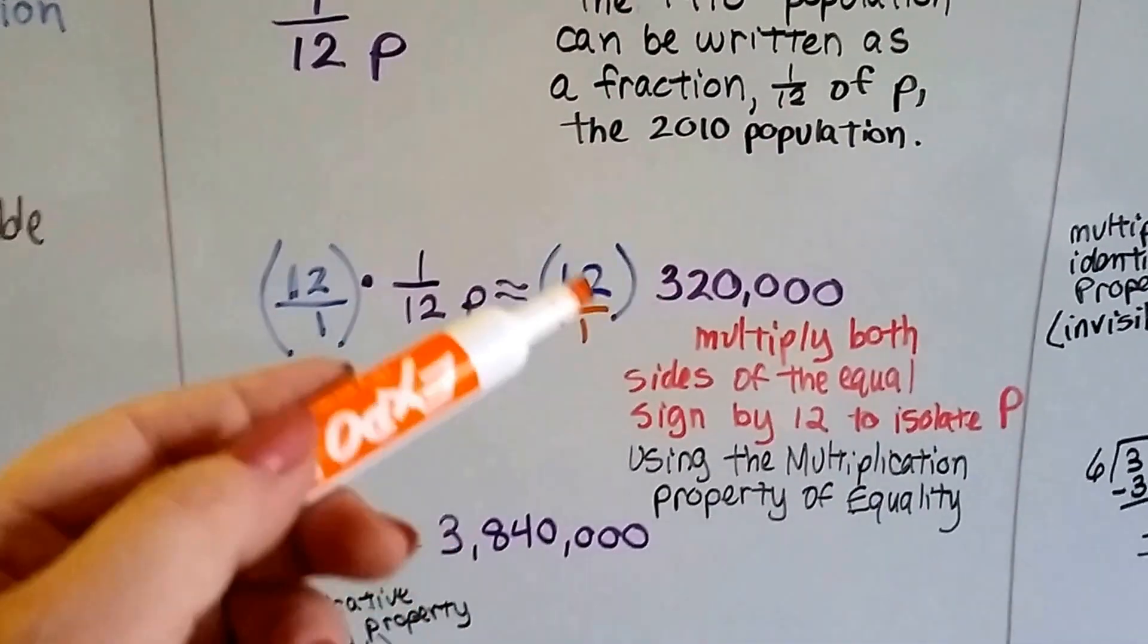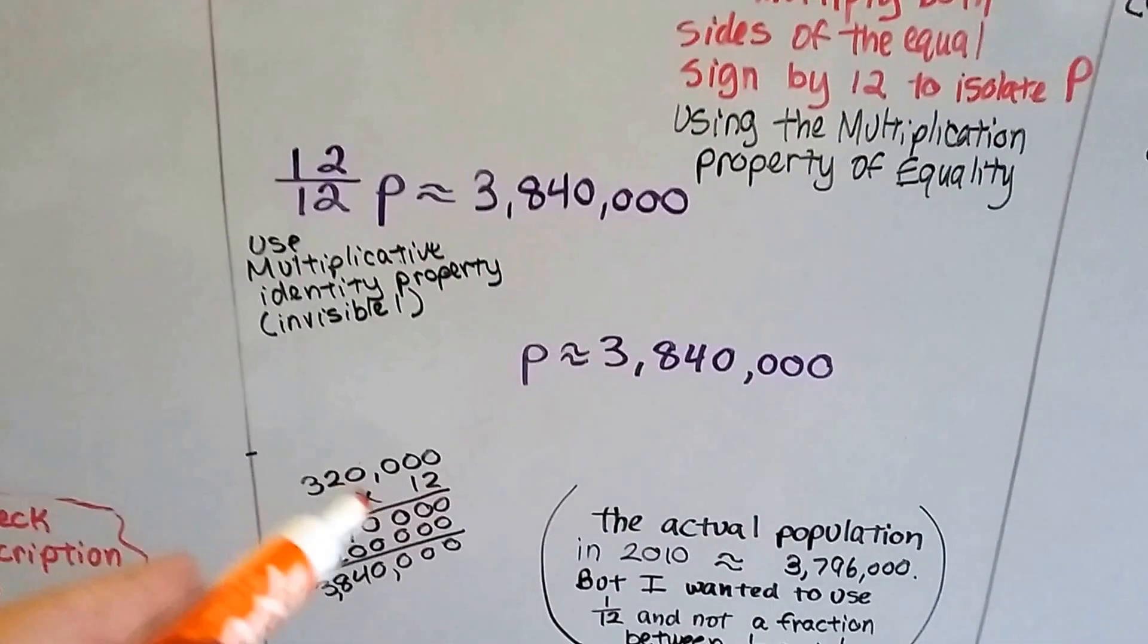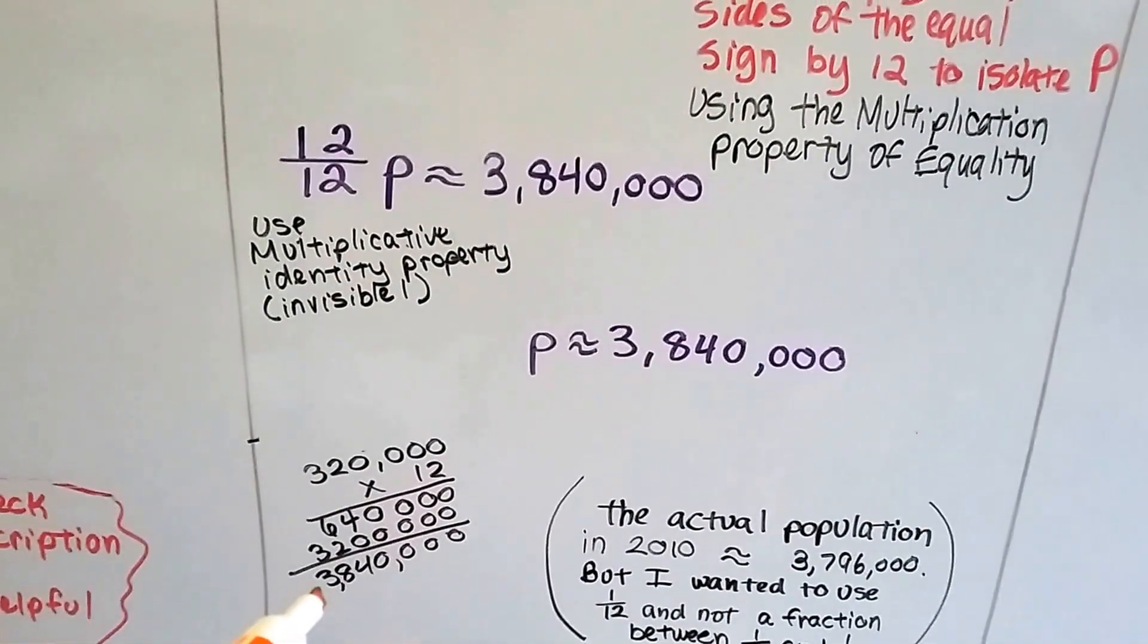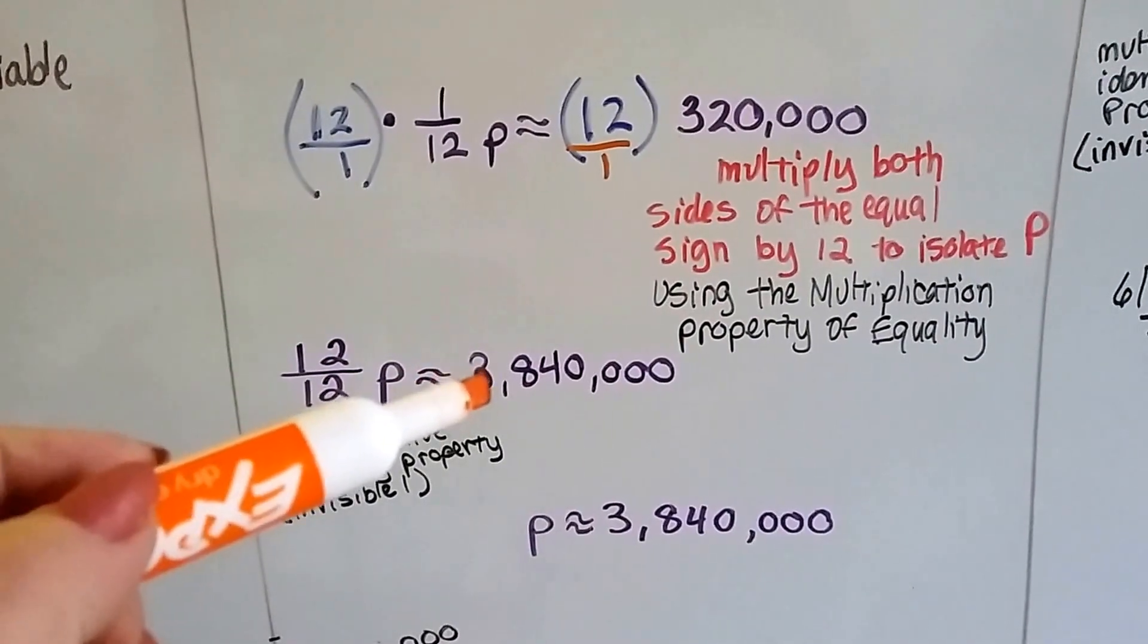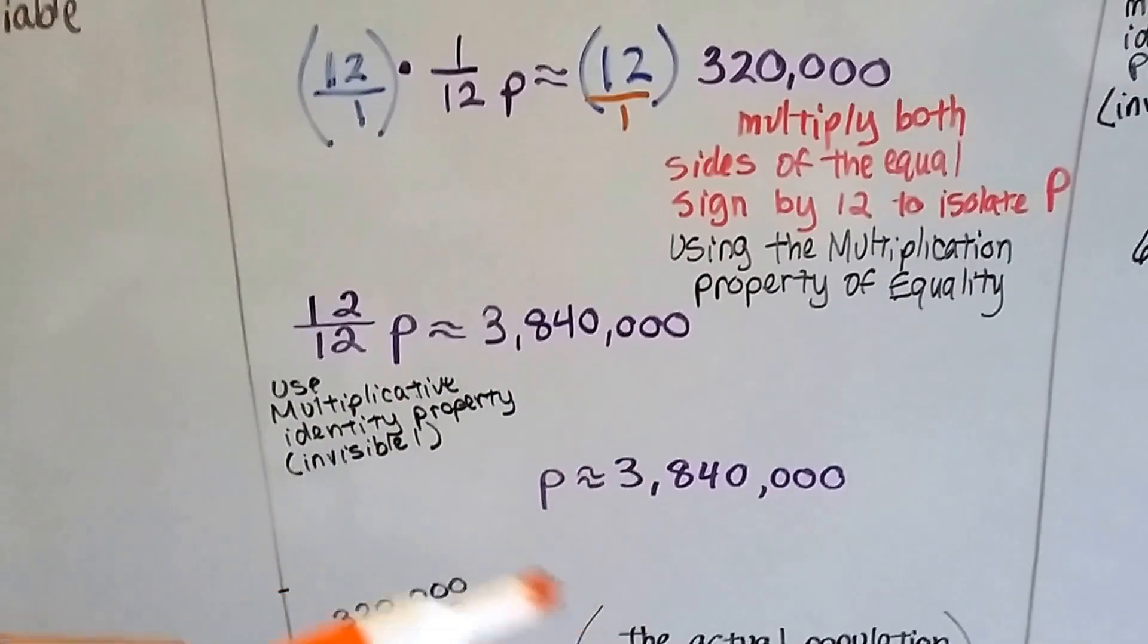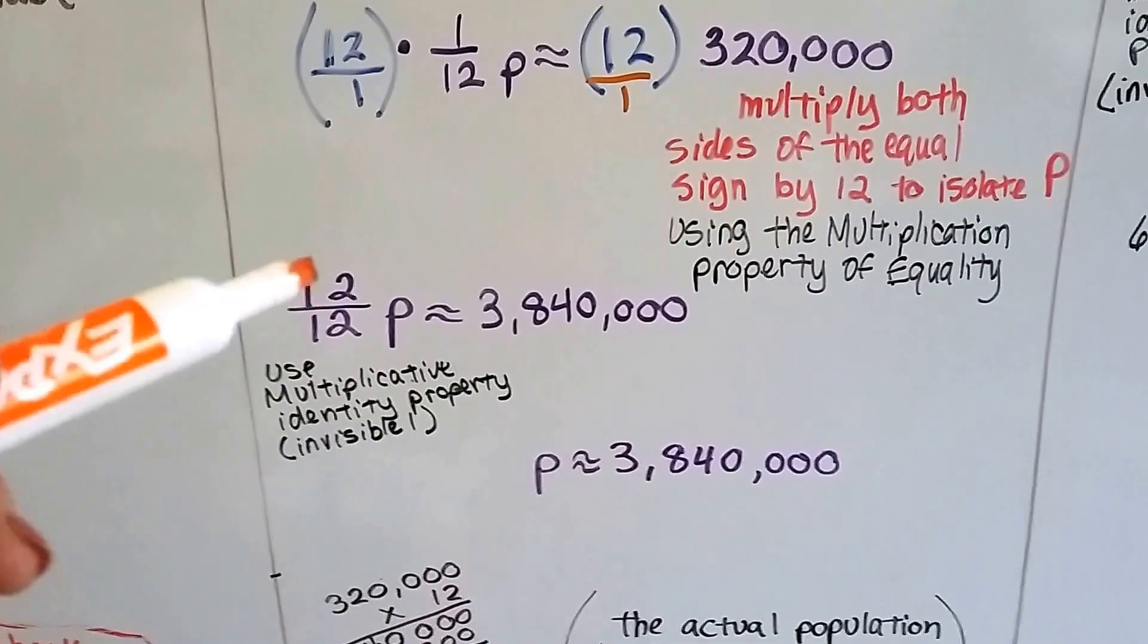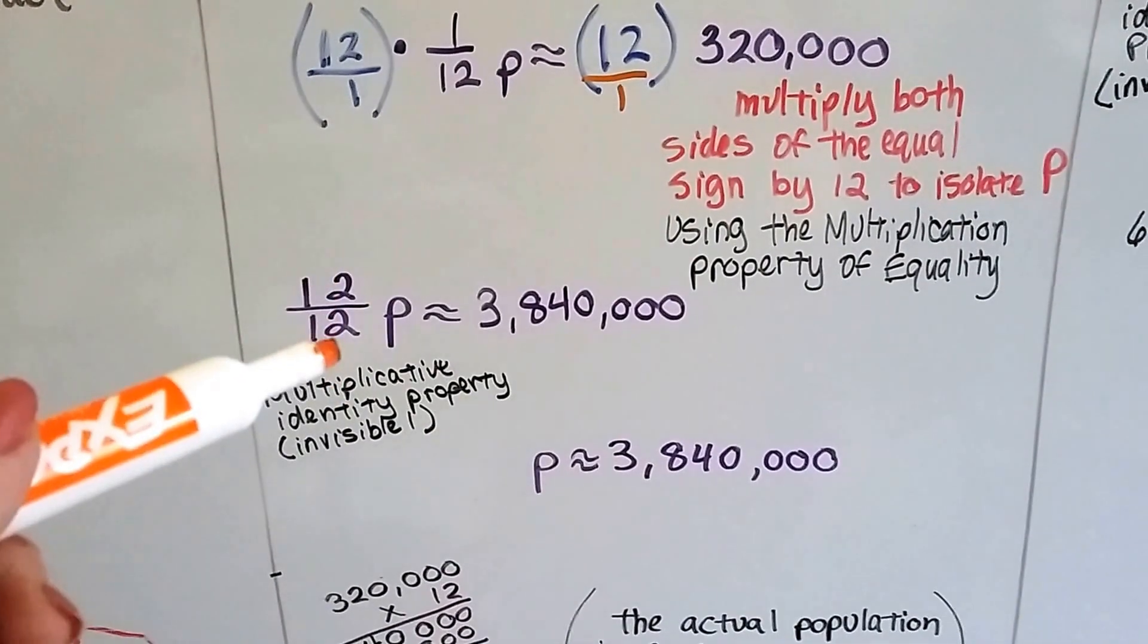We multiply the 320,000 by 12, do a little math on the side, and we get 3,840,000. So we know 12 over 12P is approximately 3,840,000. And this can turn into our little friend, the invisible one.